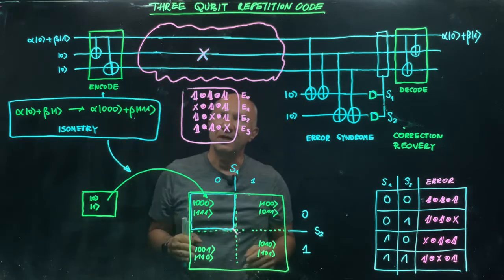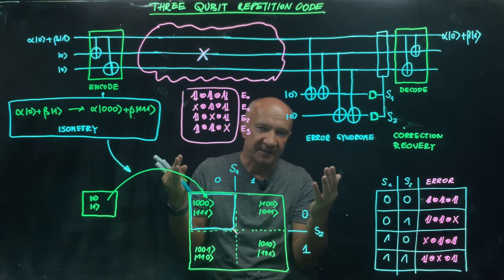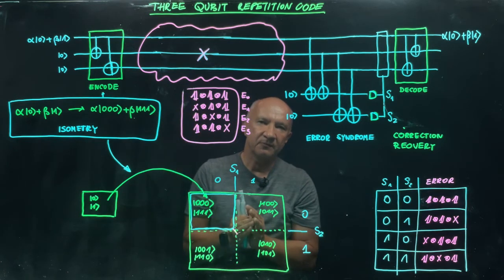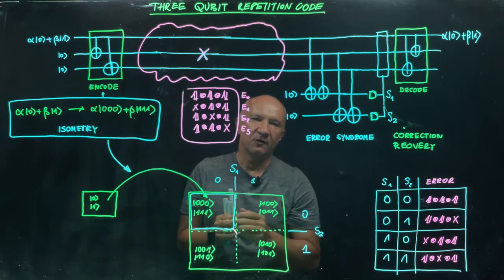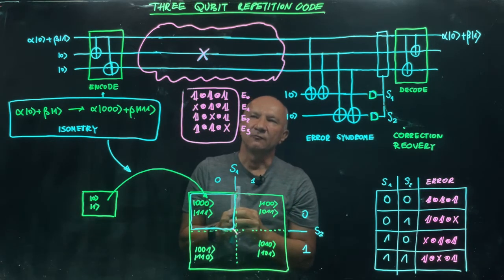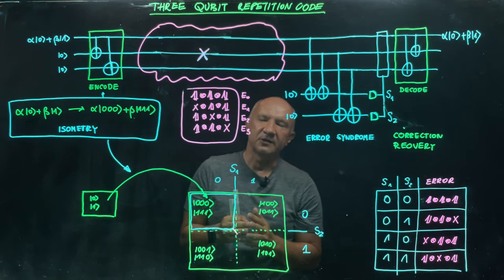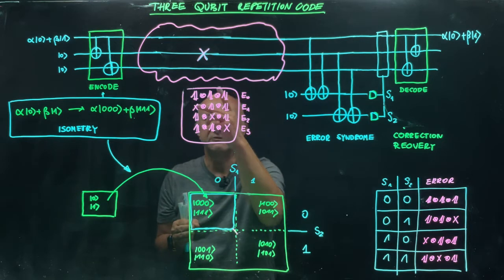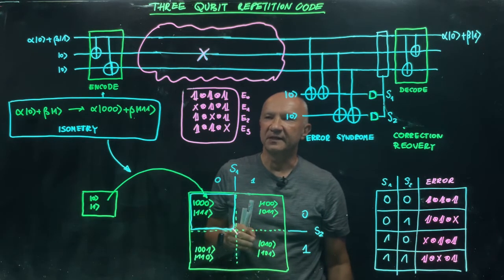Now errors happen. We are moving to the second segment. We have three qubits, and four things can happen. We assume there is a completely positive map defined by four Kraus operators, or four errors. E0 is the case where no error happens. E1 describes a bit flip error on the first qubit, E2 describes a bit flip error on the second qubit, and E3 describes a bit flip error on the third qubit.